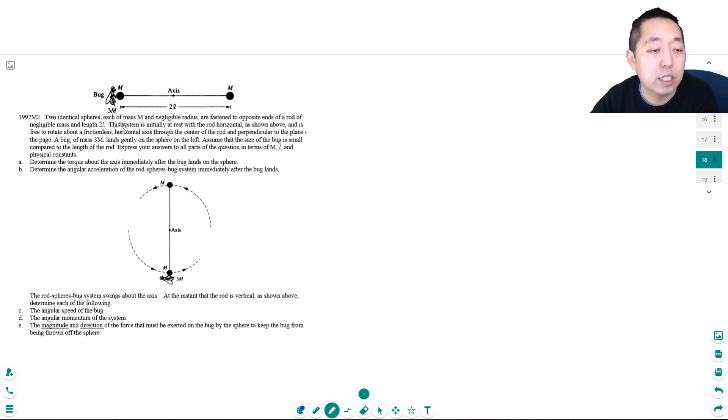Two identical spheres, each of mass m, are fastened to opposite ends of a rod of length 2l. The system is initially at rest when a horizontal bug of mass 3m lands on it. Determine the torque, then determine the linear acceleration after the bug lands.